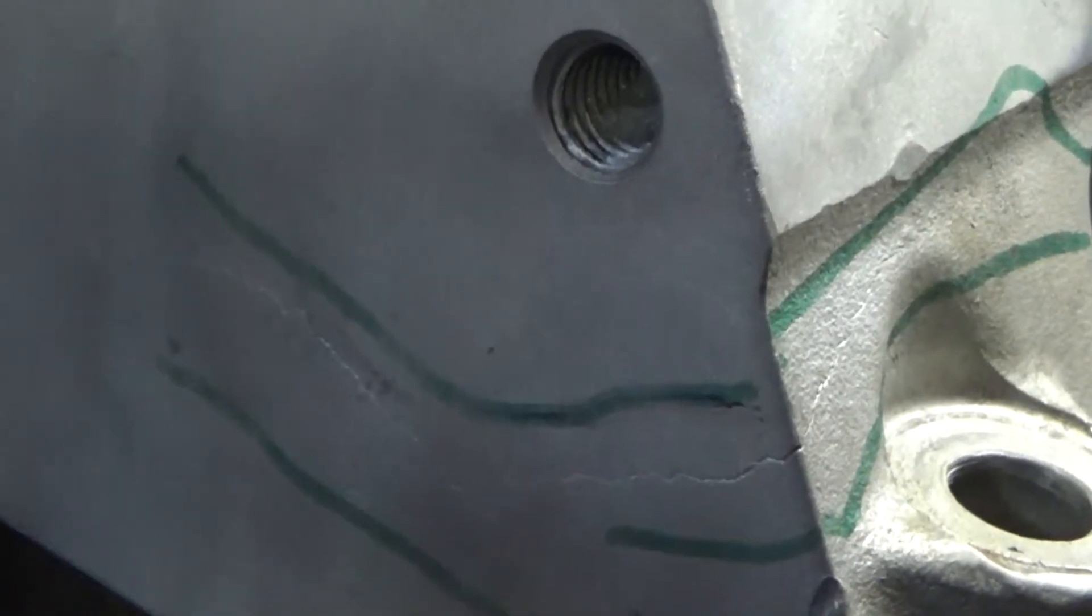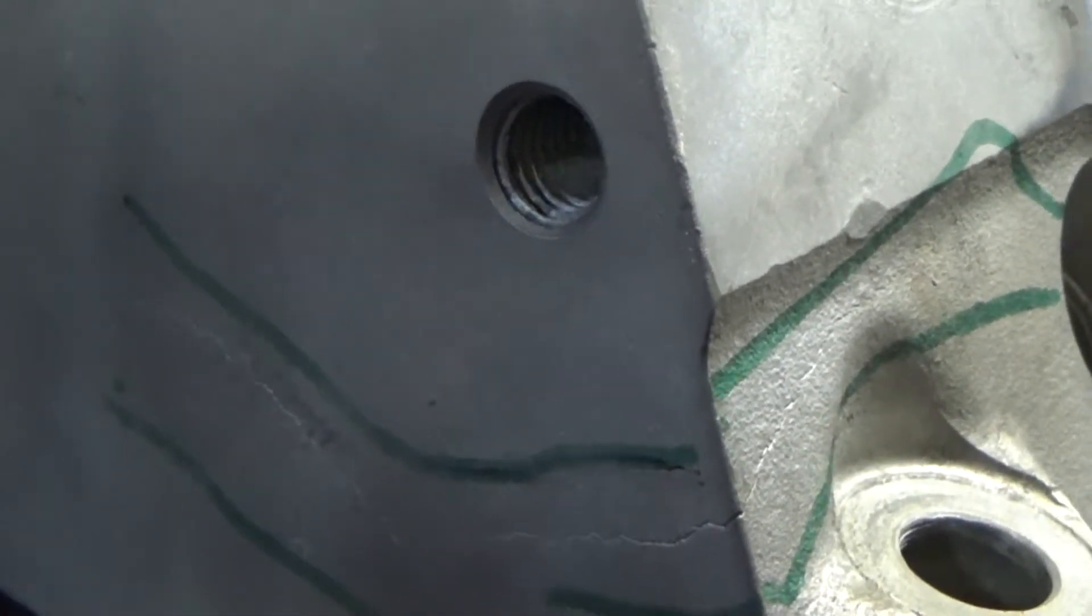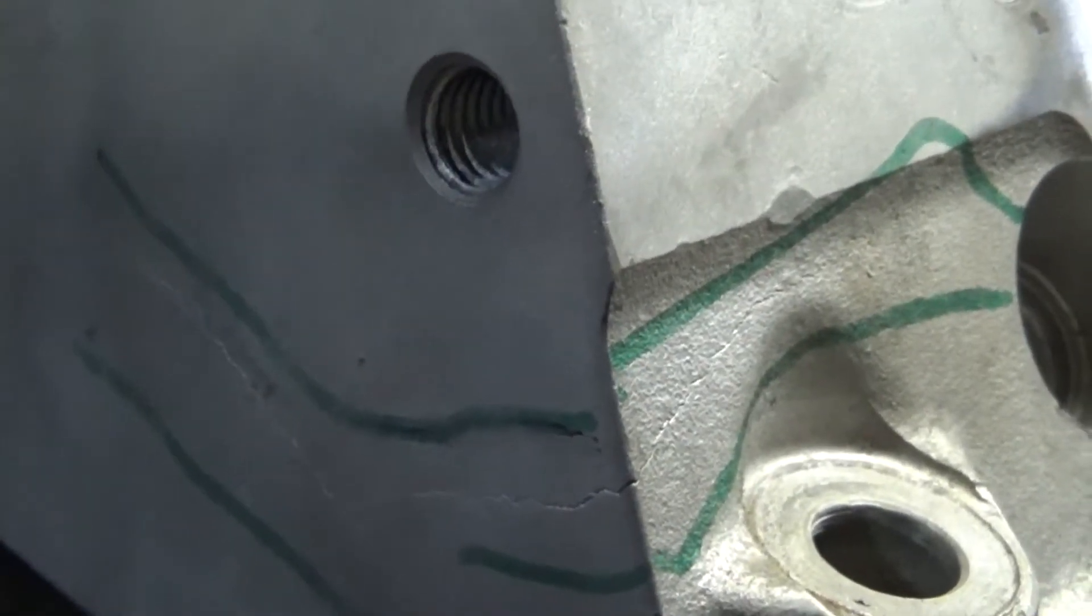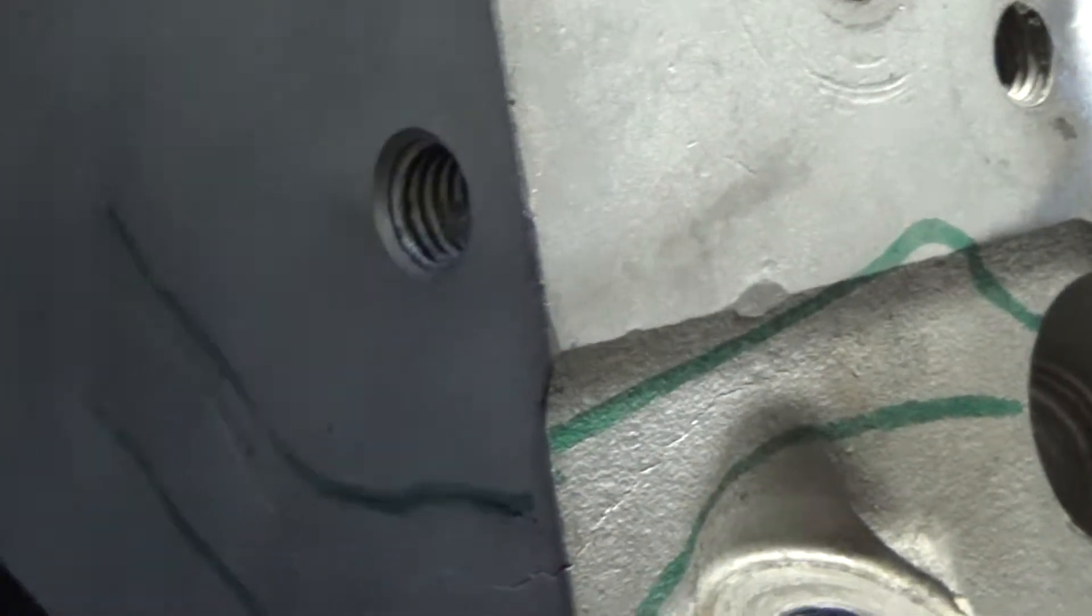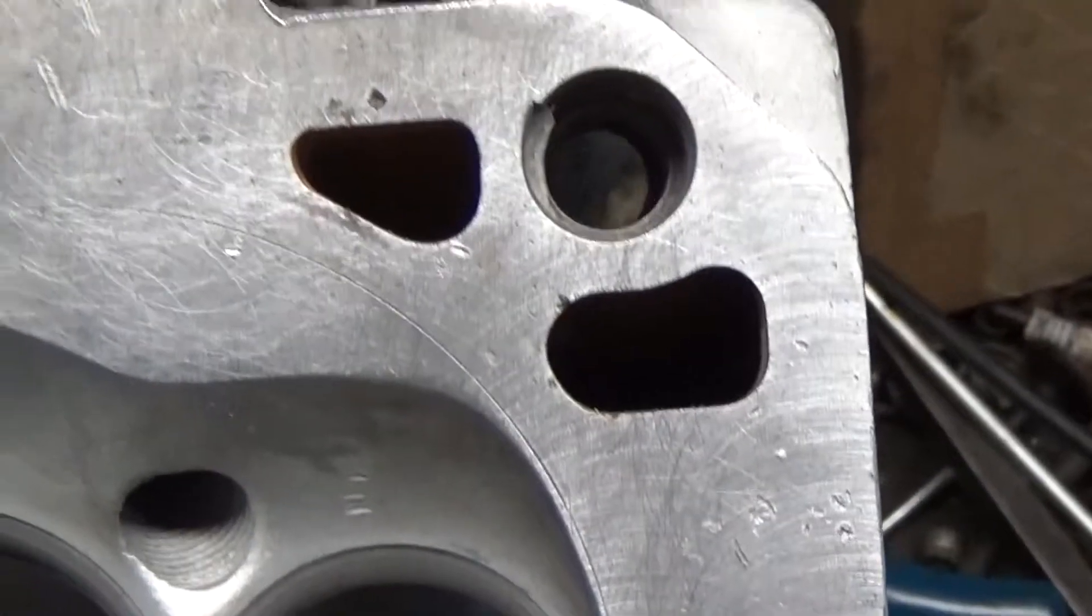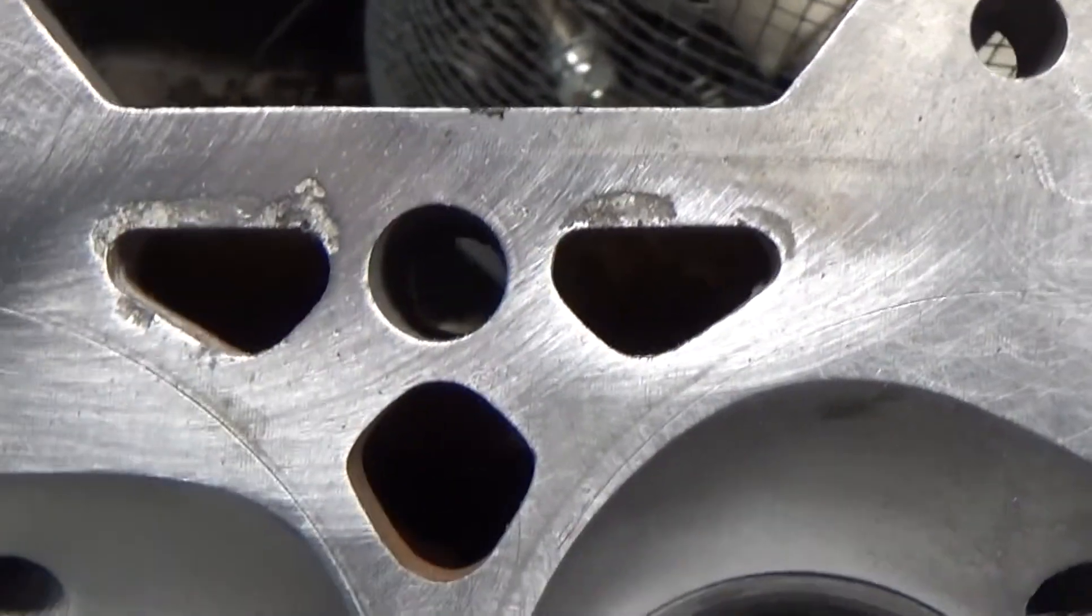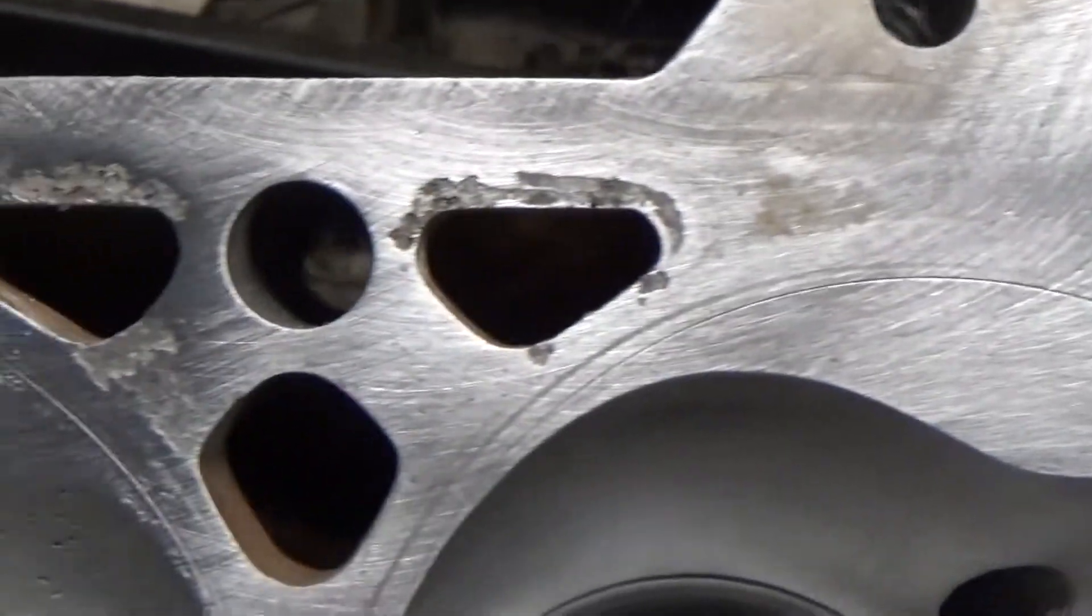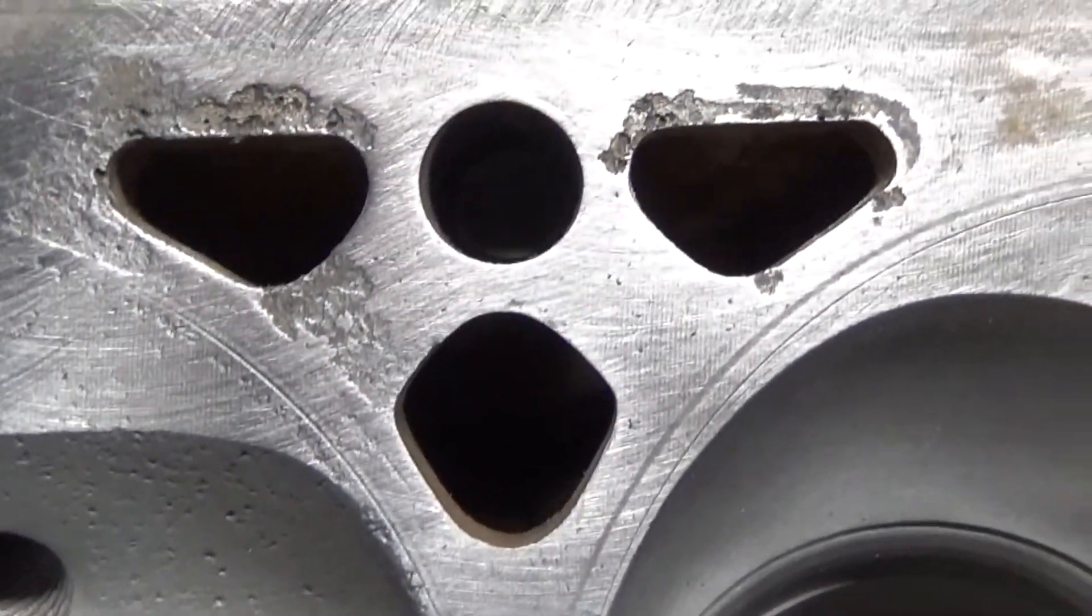So, first thing we're going to do is pressure test this, see the extent that it cracks, clean the head a little better, and then we'll have a better idea of what we're going to look for here. Also, on the deck of the head, apparently the customer was too lazy to maintain their coolant. As you can see, there's a lot of aluminum rot around all the water ports.